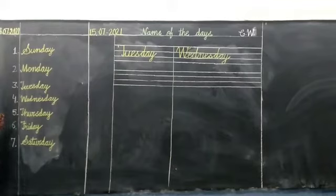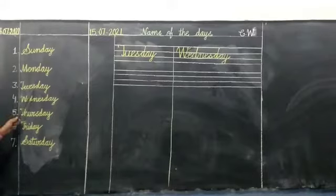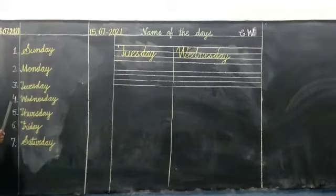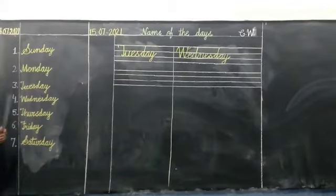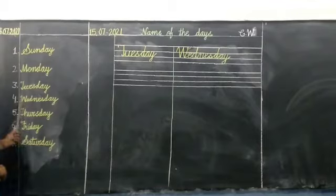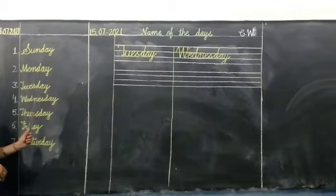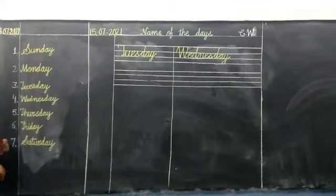Next day is number 3, Tuesday. T-U-E-S-D-A-Y, Tuesday. The 4th day is Wednesday. What is the spell of Wednesday? W-E-D-N-E-S-D-A-Y, Wednesday.